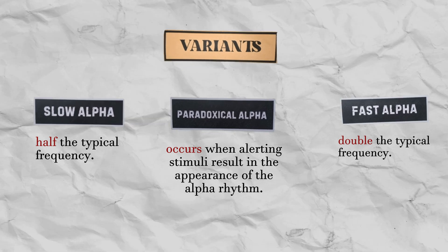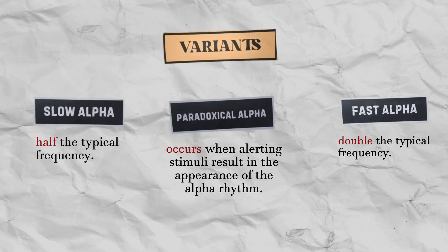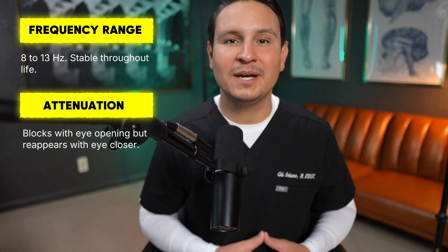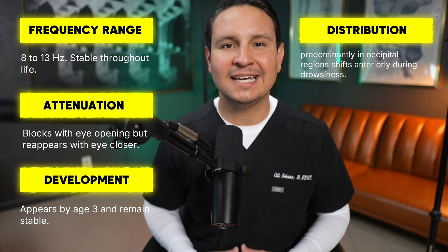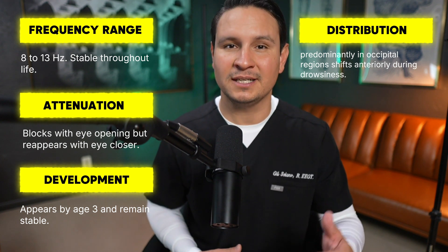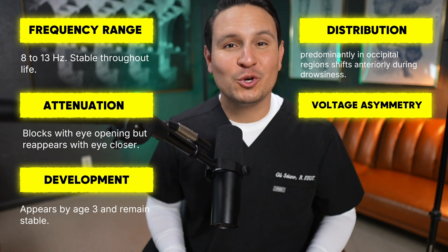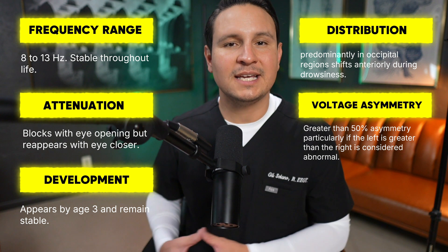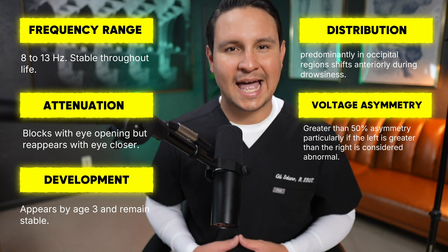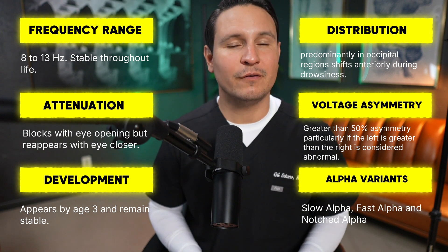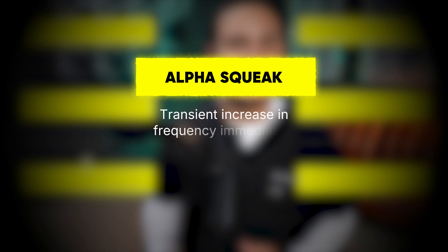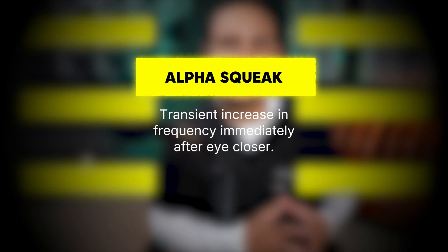To wrap up, here are the key points to remember about the alpha rhythm. Frequency range: 8 to 13 Hz, stable throughout life. Attenuation: blocks with eye-opening but reappears with eye-closure. Development: appears by age 3 and remains stable. Distribution: predominantly in occipital regions, shifts anteriorly during drowsiness. Voltage asymmetry: greater than 50% asymmetry, particularly if the left is greater than the right, is considered abnormal. Alpha variants: slow alpha, fast alpha, and notched alpha. And lastly, alpha squeak: transient increase in frequency immediately after eye-closure.